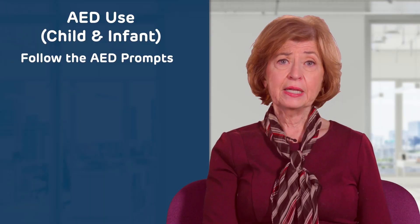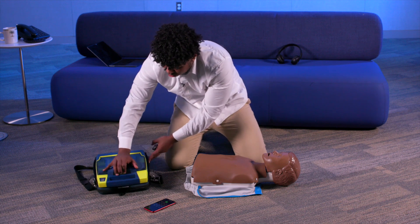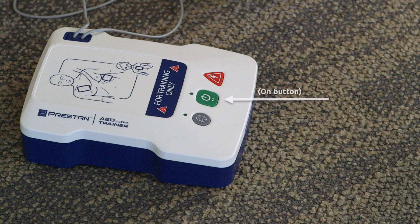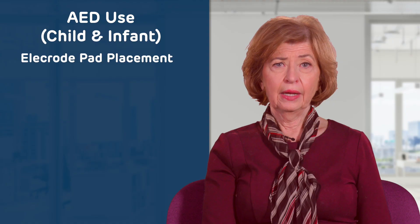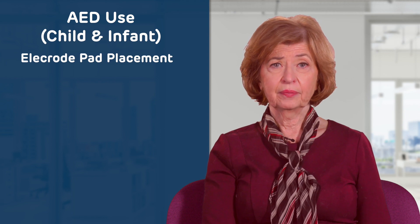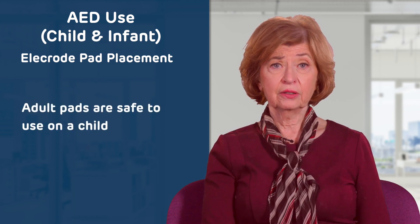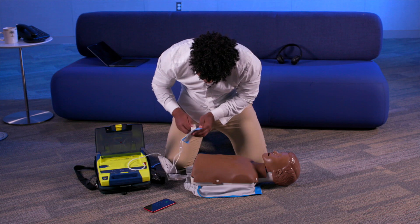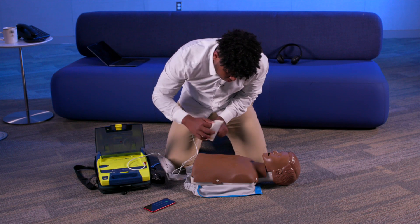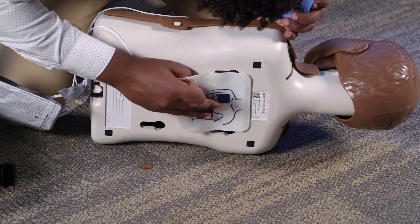Follow AED prompts. Once the AED is on scene, open the unit, turn it on if needed, and plug in the child or pediatric pads if available. Electrode Pad Placement: If the unit only has adult electrode pads, they are safe to use on a child. Place one pad in the center of the child or infant's chest and one on the center of the back of the chest.